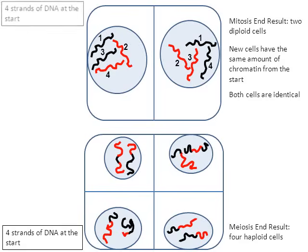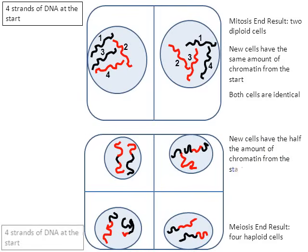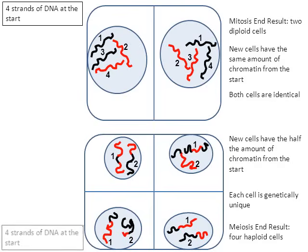The cells on the bottom just went through meiosis, but remember at the start they each had four strands of DNA. The new cells have half the amount of chromatin as they did from the start. Each of the four cells only has two strands of chromatin — the upper right, lower left, and lower right cells all have only two strands. That's because these are haploid cells created by meiosis. Also, each cell is genetically unique — each has a unique mixture of red and black strands of chromatin because of the process called crossing over, which took place back in prophase number one. That is one of the major unique differences of meiosis that does not happen during mitosis.